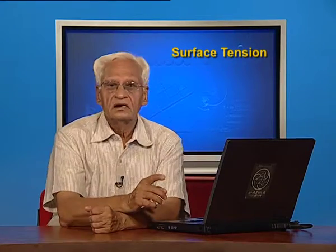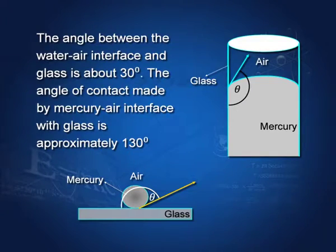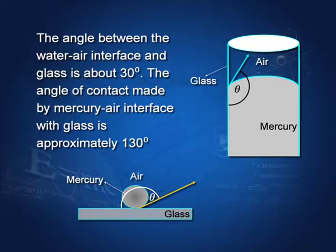The angle of contact between water and glass is about 30 degrees. If you take mercury, then the surface is convex and the angle of contact, measured through the liquid, is about 130 degrees. You can also see the same thing with a mercury drop on a glass plate — this angle is the angle of contact.